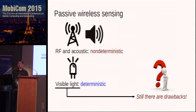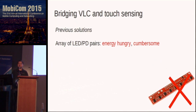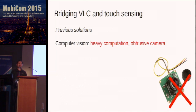However, there are still various drawbacks. For example, we have side-side, which uses an array of LED and PD pairs to tell which beam is being cut by the user's finger, telling the position of the finger. However, this solution is energy-hungry and cumbersome because it requires many LED and PD pairs. Also, computer vision is a very popular method, such as touchless and many so-called laser projection keyboards. However, this method requires heavy computation and a bulky camera module, which does not fit devices with tiny sizes.